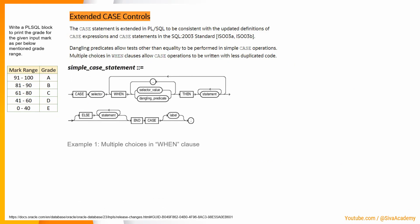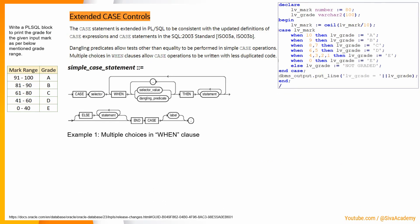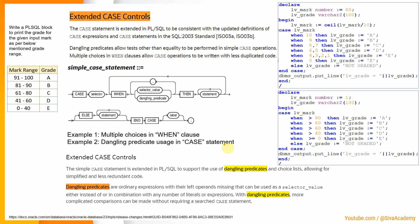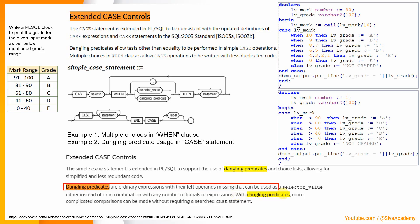Let me show the documentation. In the 23c syntax, the first feature is multiple values as part of the WHEN clause. The second feature is dangling predicate usage — the WHEN clause has only the right-hand side operator with the left-hand side missing. From Oracle documentation: dangling predicates are ordinary expressions with their left operands missing, that can be used as the selector value. Oracle substitutes lv_mark as the missing left operand.